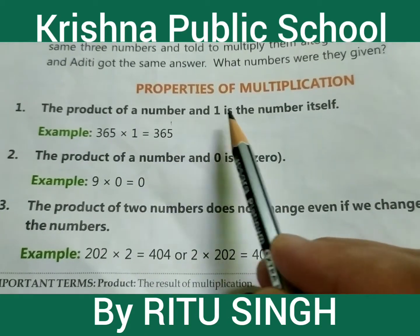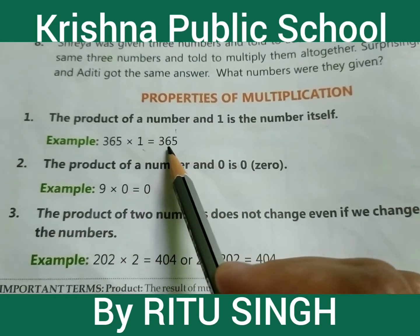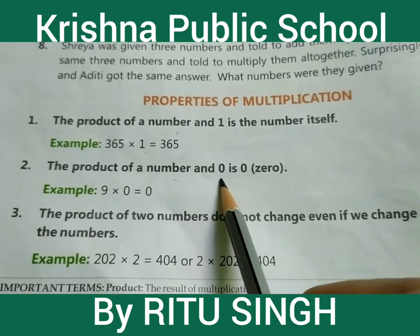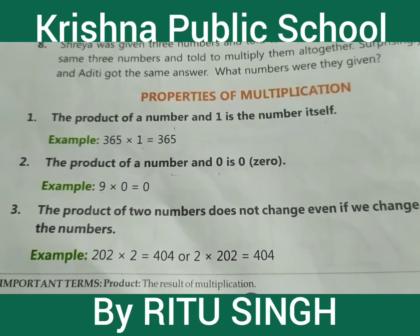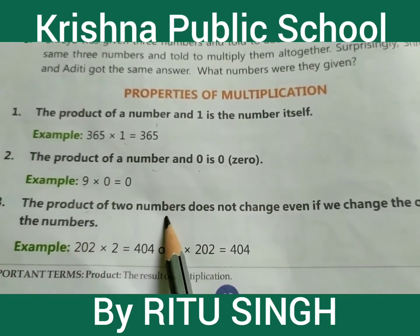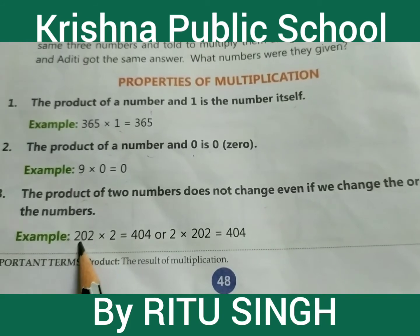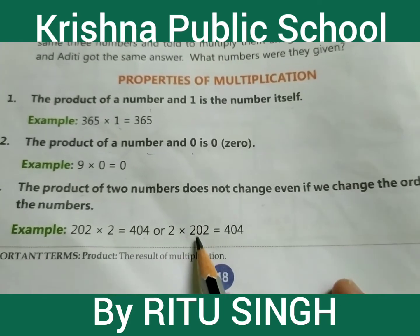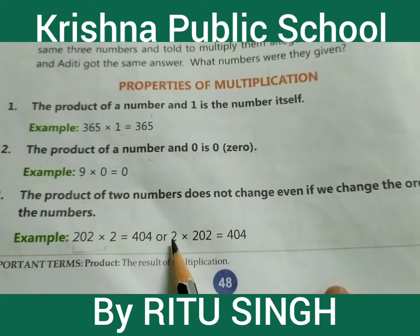Important point: the product of a number and 1 is the number itself. For example, 365 multiply by 1, your answer is 365. Next point: the product of a number and 0 is 0. For example, 9 into 0 equal to 0, 2 into 0 equal to 0, 1 into 0 equal to 0. Next important point: the product of two numbers does not change even if we change the order of the numbers. For example, 202 multiply by 2 is 404, and 2 into 202 is also 404 — you change the order, your answer does not change.